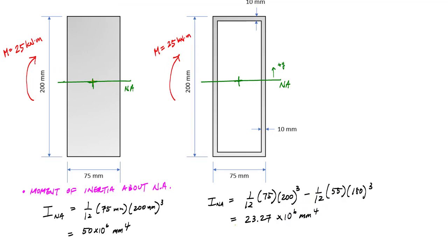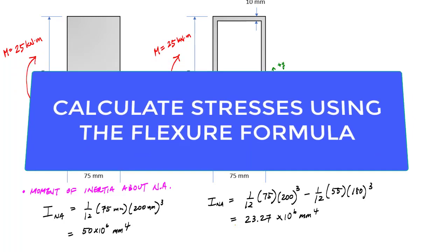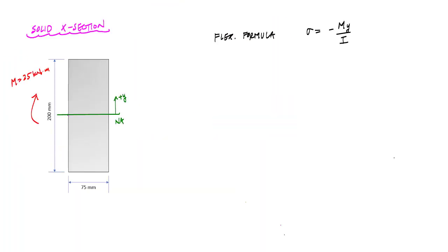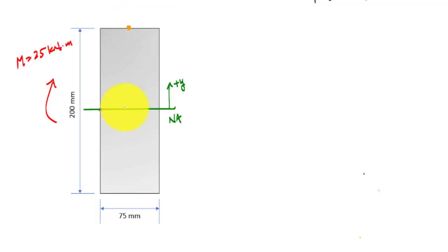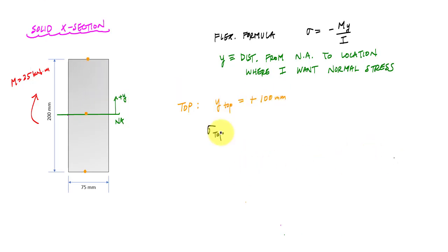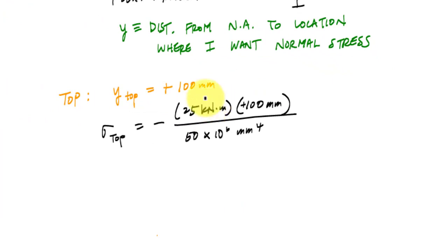Now that I know the centroid and moment of inertia of my cross section, I can apply the flexure formula to calculate stresses at different locations along the height. Starting with the solid cross section — here's the flexure formula. This is a positive internal bending moment because it causes compression at the top. I want to calculate the normal stress at the top, the neutral axis, and the bottom. What's changing is the distance Y from the neutral axis to the location where I want the stress. For the top, Y is positive 100 millimeters.